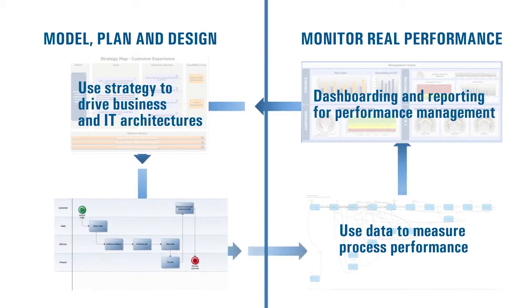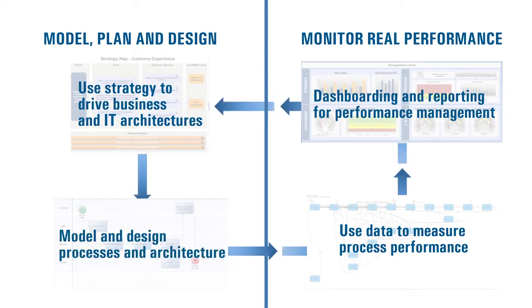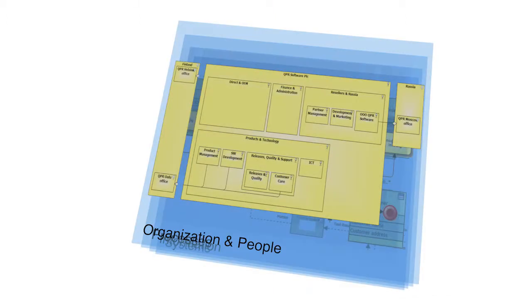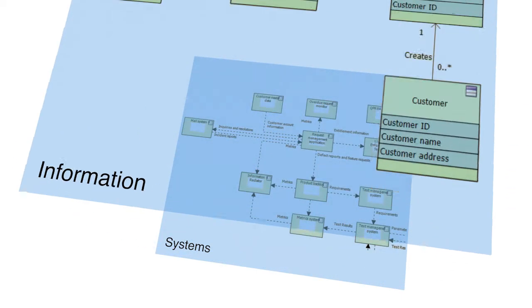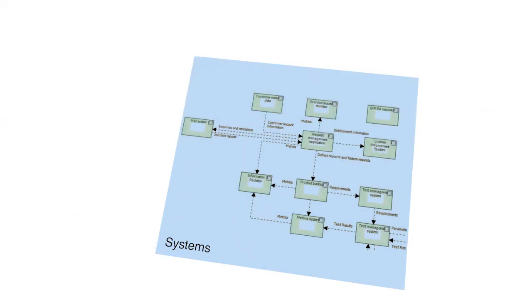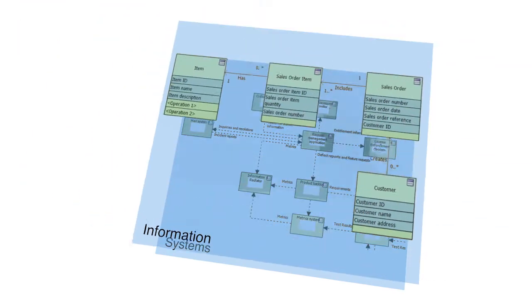QPR Enterprise Architect is designed to plan current and future strategy execution, business operations, and operational development projects. Organizations consist of people who perform work activities which produce information that is stored in process and information systems. All these things make an organization work.